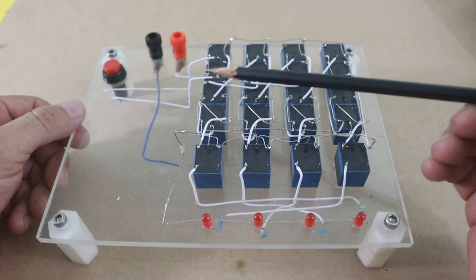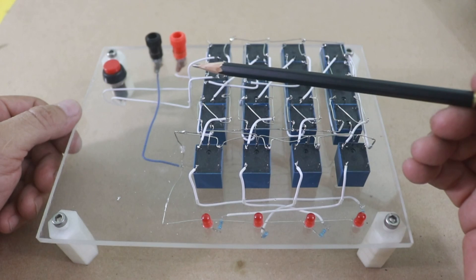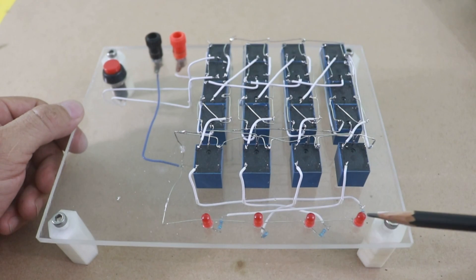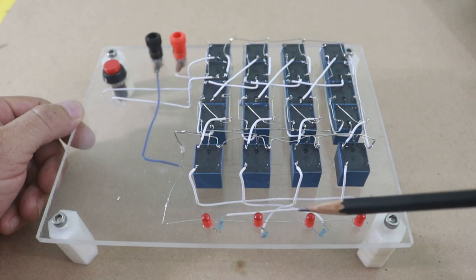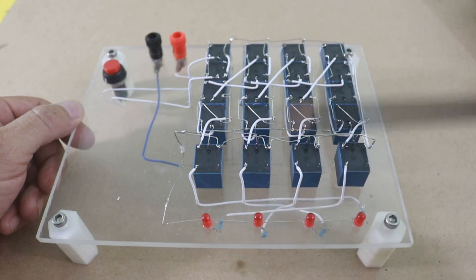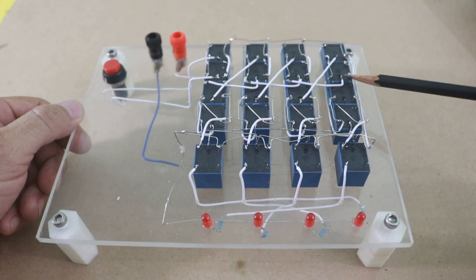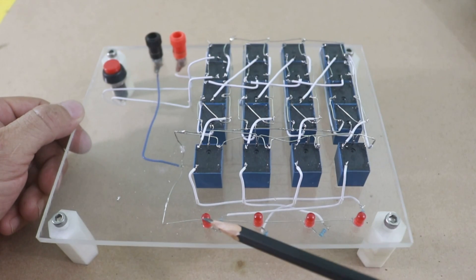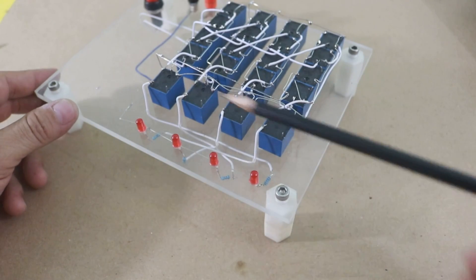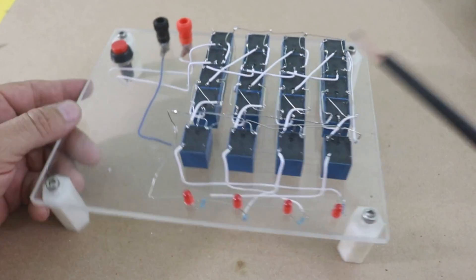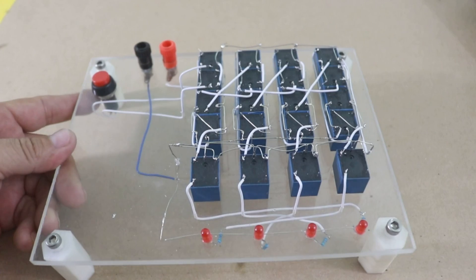So the output of the first flip-flop, which is the least significant digit, goes to this LED. The output of the second goes here, the third here, and the last flip-flop, which is the most significant digit, goes to the first LED. These four relays are inverters because the output of the original circuit is inverted.